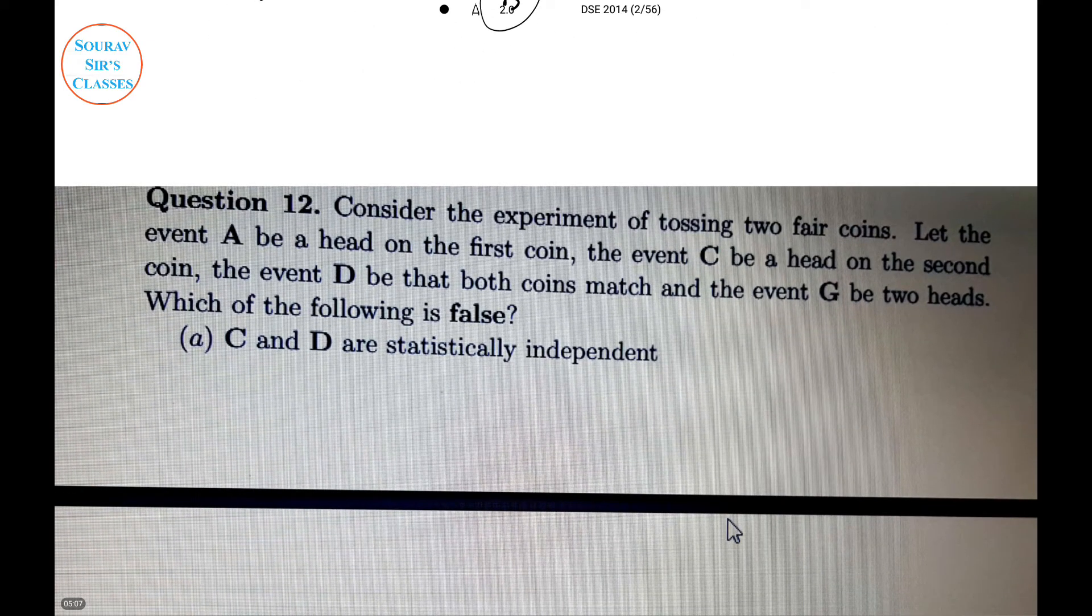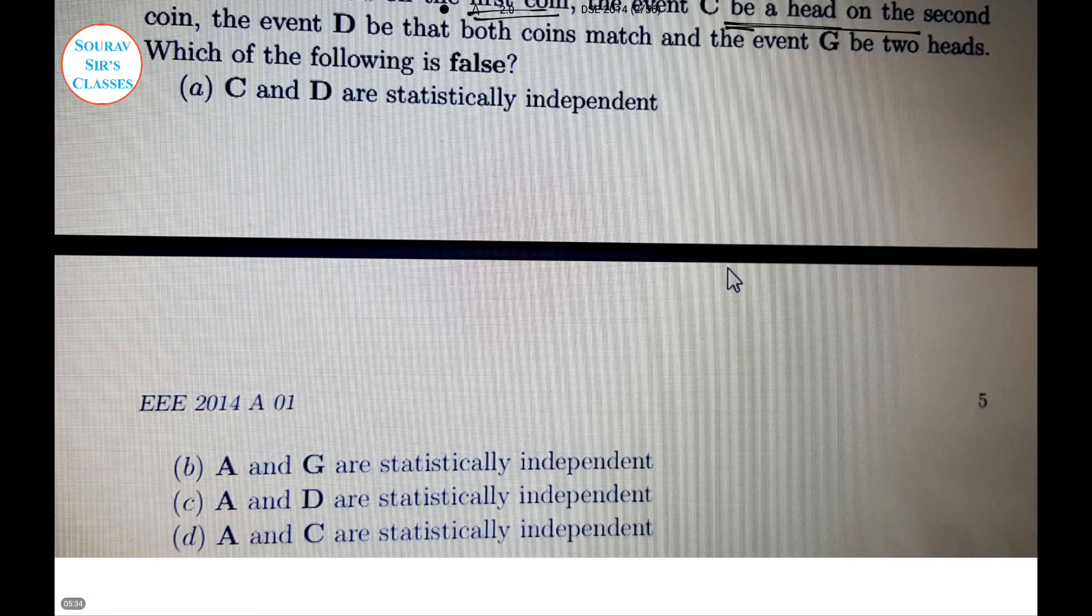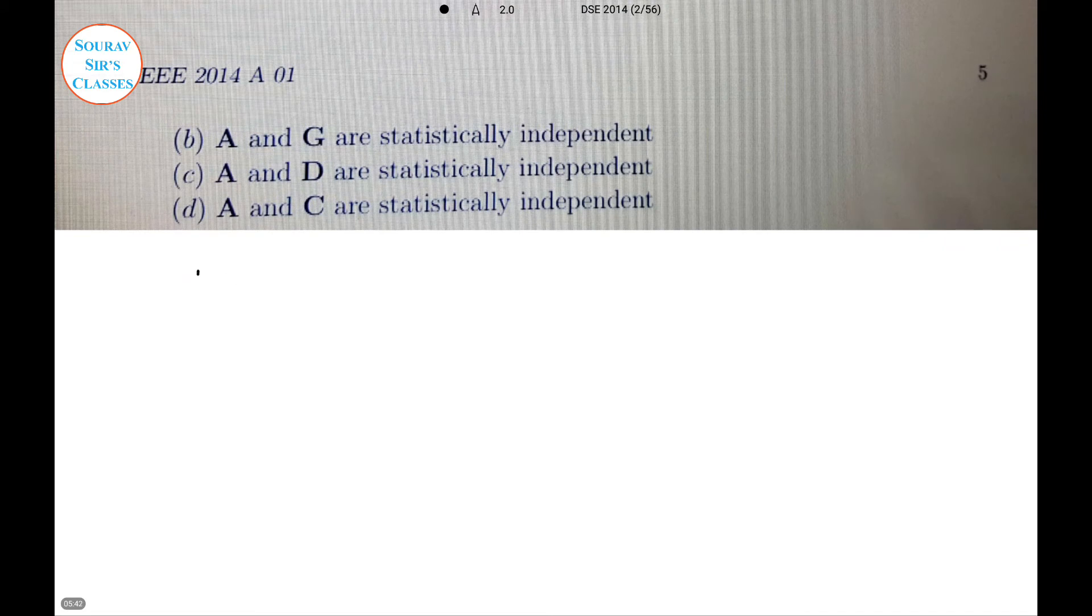Now proceeding to the next question. Consider an experiment of tossing two fair coins. Let event A be head on the first coin, C be head on the second coin, event D be both coins match, and G be both are heads. Which of the following is false? It's all about statistical independence, so we need to proceed with intersection. Remember that P of A intersection D equals P of A times P of D if they are independent.